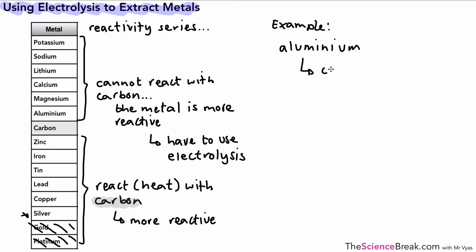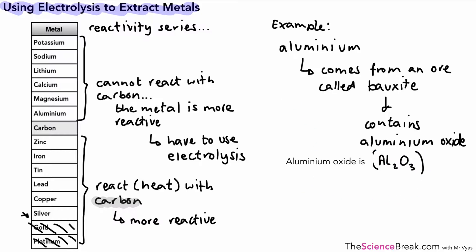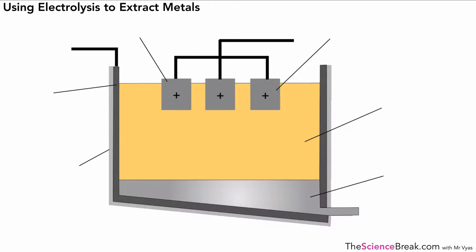So aluminum comes from an ore, and that's a rock containing large amounts of the metal or the metal oxide. But it comes from an ore and that ore is called bauxite. Bauxite contains a lot of aluminum oxide. So we can use that ore to extract aluminum, which is a very useful metal. Aluminum oxide is Al2O3 and we'll be using that in this video in a little while. So we have bauxite as our raw material that contains that aluminum oxide.